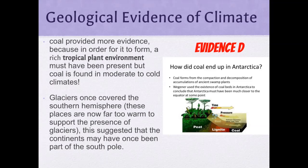The land masses must have moved from closer to the equator out towards the Northern or Southern hemisphere to explain why so much coal is found there. Another piece of evidence is glaciers: glaciers once covered the Southern hemisphere, but these places are now far too warm to support glaciers. This suggests that the continents may have once been part of the South Pole region.